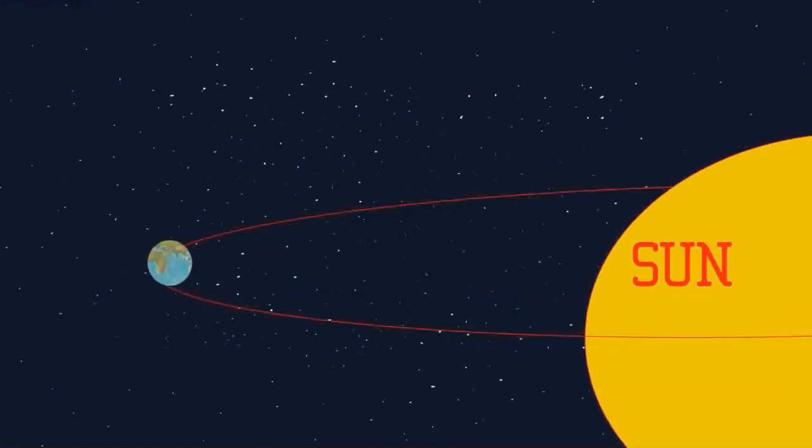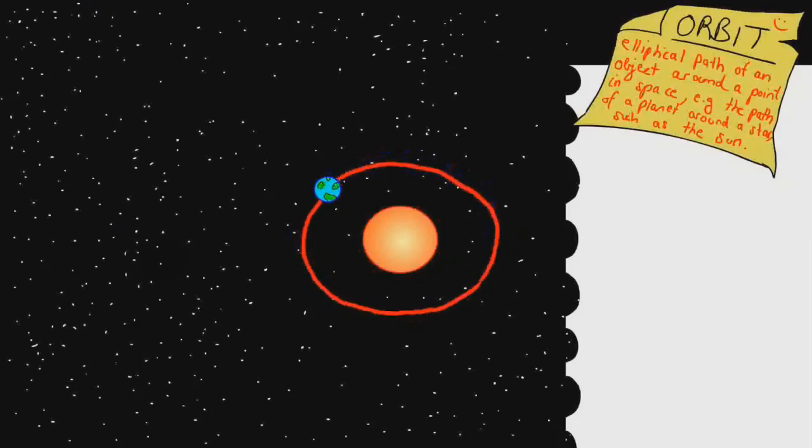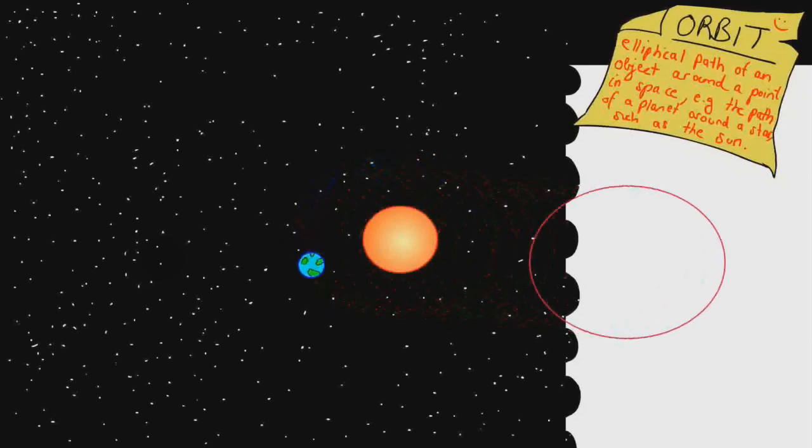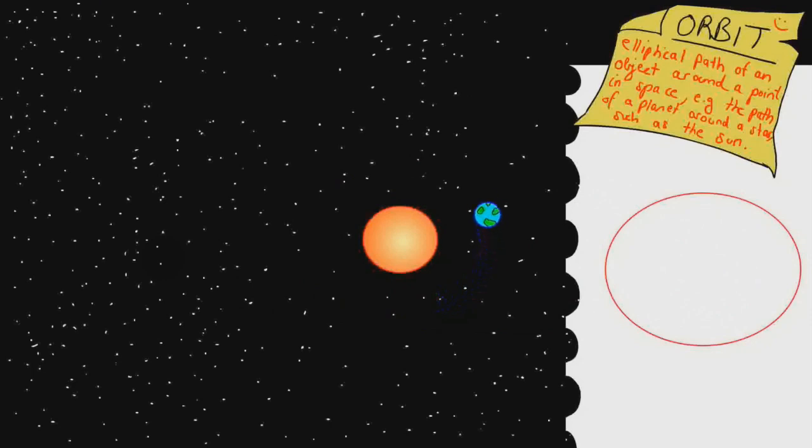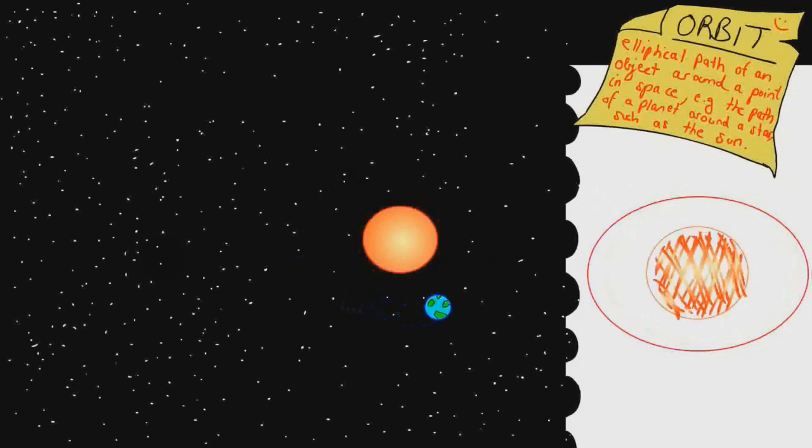Earth also revolves around the Sun. It revolves in an elliptical orbit. It's kind of like an oval, but it's actually a special type of oval. When looking at Earth's orbit, it's kind of hard to tell that it's elliptical instead of just round because it's so close to a circle.